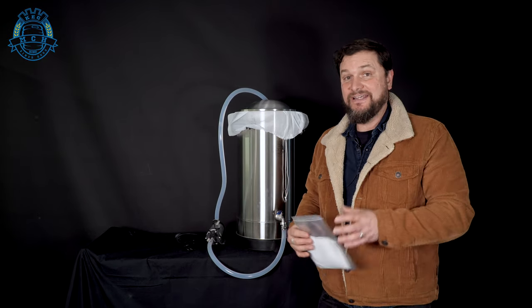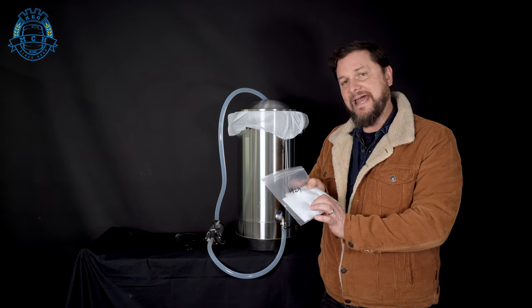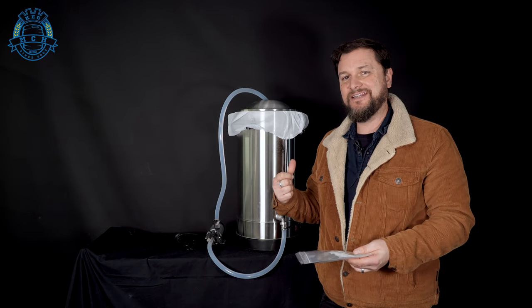So once we're done with the mash, this little brew in a bag setup, we'll be able to boil and add hops using these hop pouches. So you'll just weigh out your hops, put them in the pouches, and chuck them into the kettle.